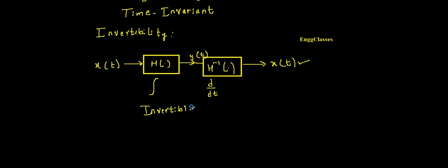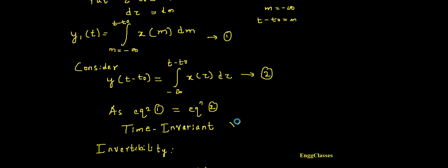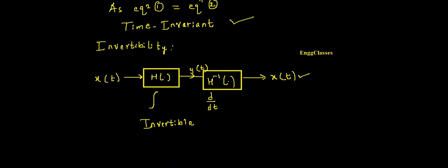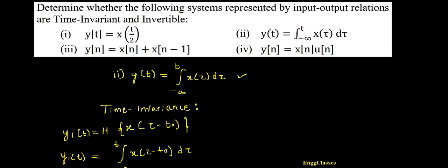To summarize: the task was to test for time invariance — the given system is time invariant. And to test for invertibility — the given system is invertible. Thank you so much for watching. If there are any doubts, please let me know in the comment section and I am happy to answer. The third numerical I would consider in the next video lecture. Till then, thank you so much for watching.